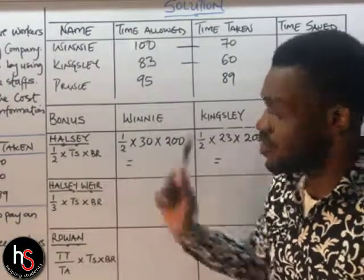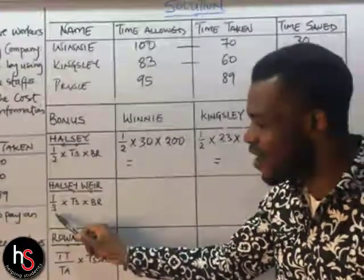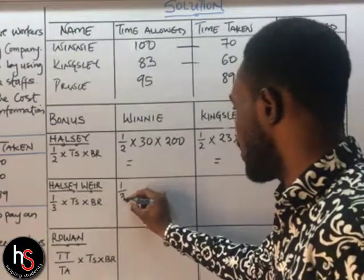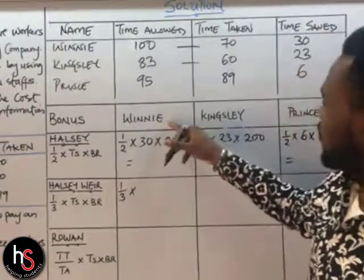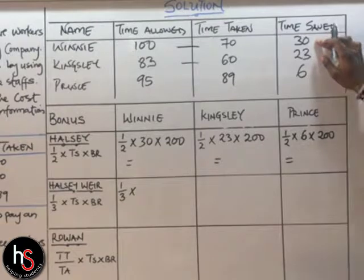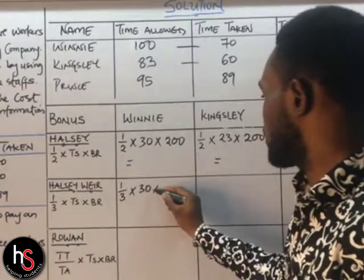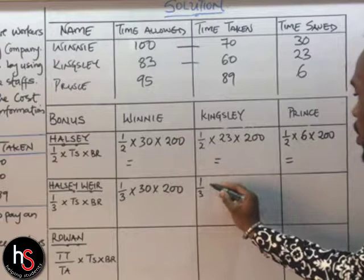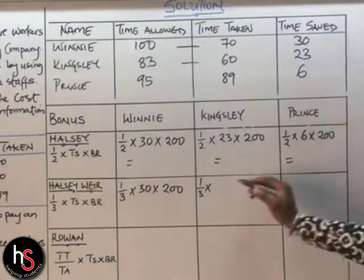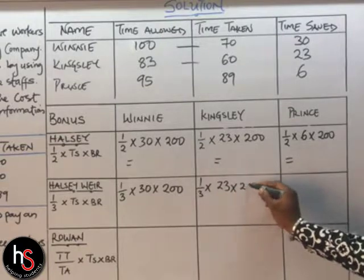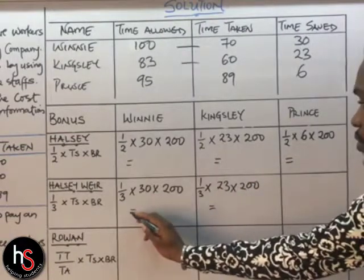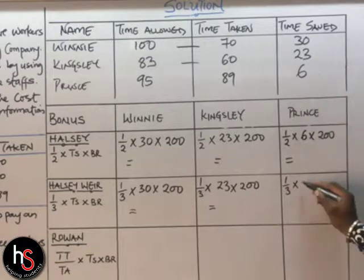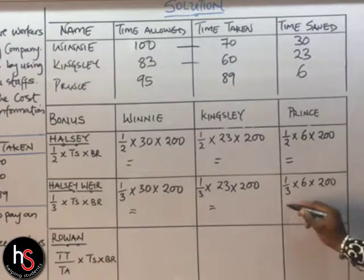For the Haslam bonus scheme, the only difference from Halsey is we use 1/3 instead of 1/2. The formula is 1/3 × time saved × basic rate. For Winnie: 1/3 × 30 × 200. For Kingsley: 1/3 × 23 × 200. For Prince: 1/3 × 6 × 200.